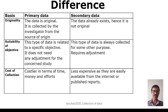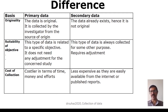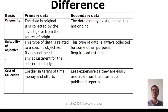Regarding cost of collection, primary data is costlier in terms of time, money, and effort. Whereas secondary data is less expensive as it is easily available from various electronic and print media, either published or unpublished. However, one needs to be careful to use secondary data from reliable sources like government organizations, health departments, or records that are considered authentic.